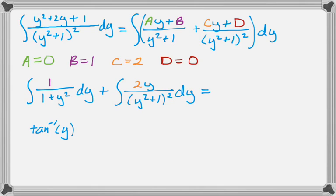and then to integrate this, let's let u equal y squared plus 1, so du is 2y dy, so it's really just u to the negative 2, so this becomes minus y squared plus 1 to the negative 1st, and then plus C.